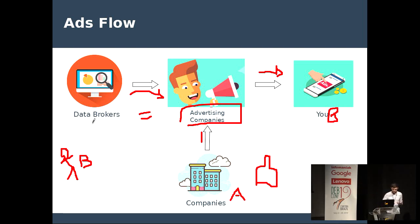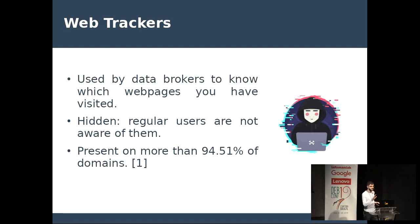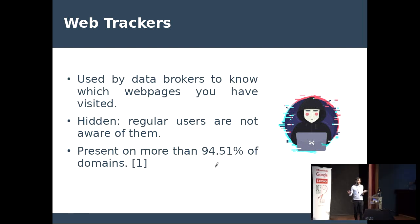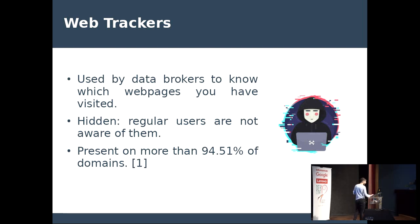Let's talk about how data brokers know this information — how they know that B searched 'how to stop drinking.' What they use are things called web trackers, which they basically put everywhere on the internet. A lot of web pages contain web trackers, and they're hidden — the user has no idea that they are there. According to a study published last month, web trackers are present on more than 94% of web pages studied.